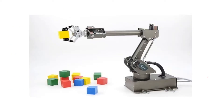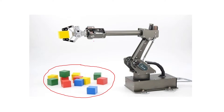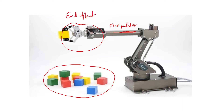Here you can see an image of a pick and place robot. These are the objects placed down which are to be picked by the robot and placed on another location. This is your manipulator arm, and here you have your end effector, which gives you the gripper used to grip the object, pick it, and hold it.